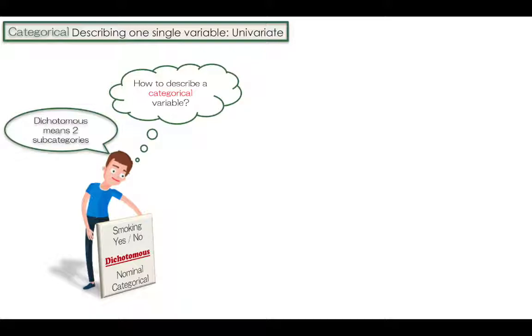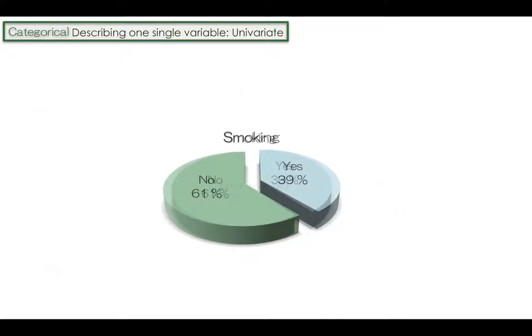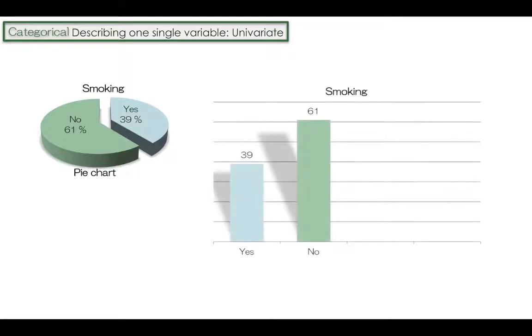We will see later that there are some advantages in giving the numerical values 0 and 1 to the two categories. The analysis of categorical data, whether dichotomous or more than two subcategories, are expressed as proportions. When shown graphically we can use a pie chart or a bar diagram.